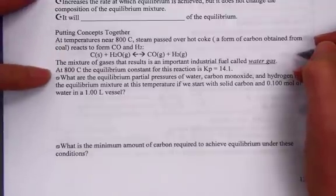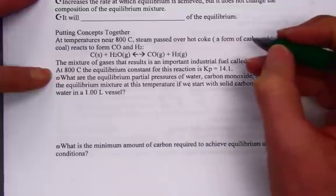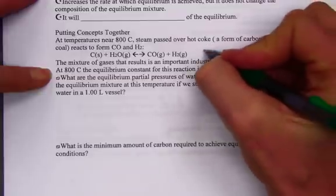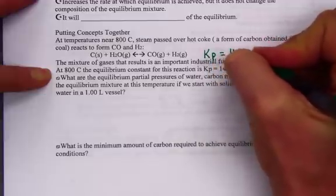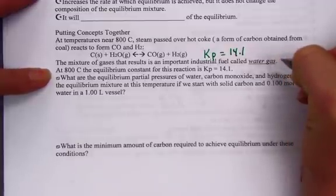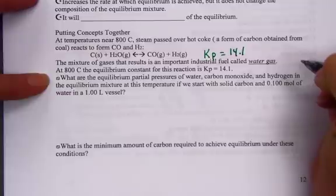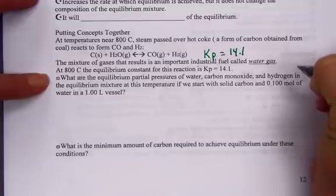This mixture of gases that results is an important industrial fuel called water gas. At 800 Celsius, the equilibrium constant for this reaction is Kp equal 14.1. What are the equilibrium partial pressures of water, carbon monoxide, and hydrogen in the equilibrium mixture at this temperature if we start with solid carbon and 0.1 mole of water in a 1 liter vessel?